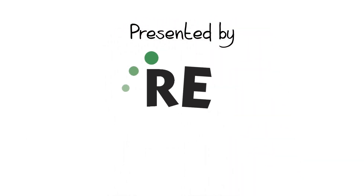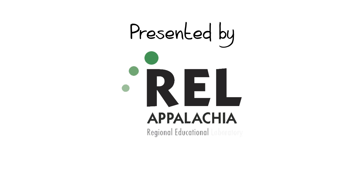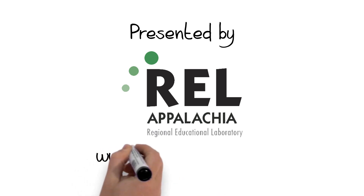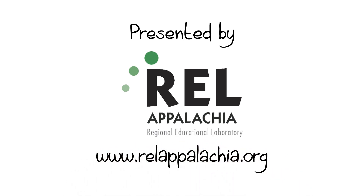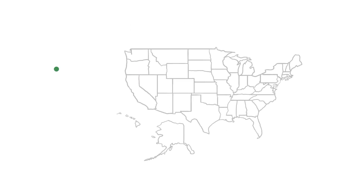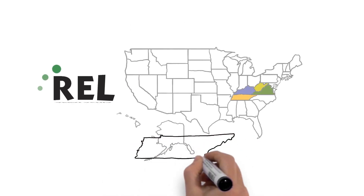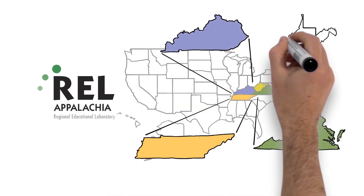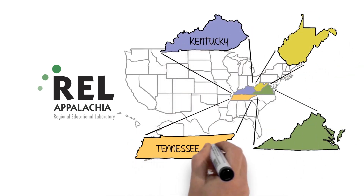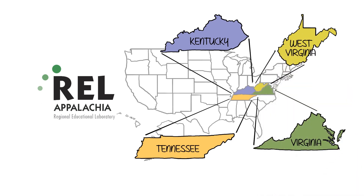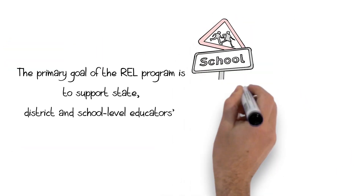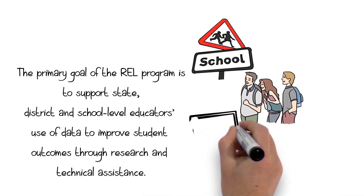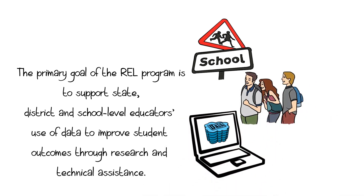REL Appalachia is one of ten regional educational laboratories in the country. We serve education stakeholders in four states: Kentucky, Tennessee, Virginia, and West Virginia. The primary goal of the REL program is to support state, district, and school-level educators' use of data to improve student outcomes through research and technical assistance.